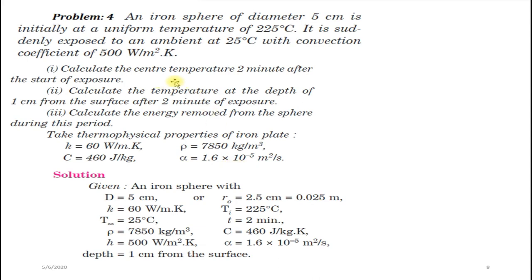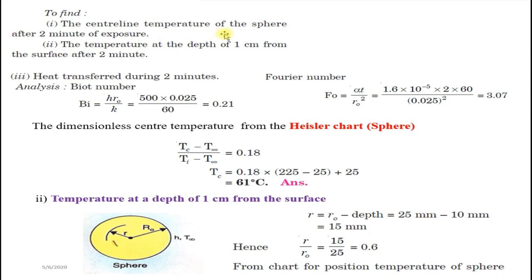For the sphere, given data: diameter = 5 cm, so radius R₀ = 2.5 cm = 0.025 m, Ti = 225°C, time = 2 minutes, T∞ = 25°C, depth = 1 cm from surface. To find the center line temperature, refer to the first graph for sphere. The Biot number and Fourier number are the same as before: Bi = 0.21, Fo = 3.07.